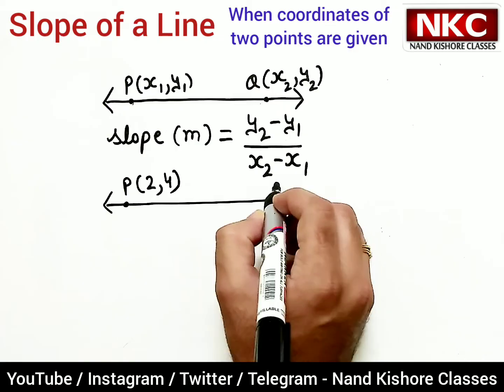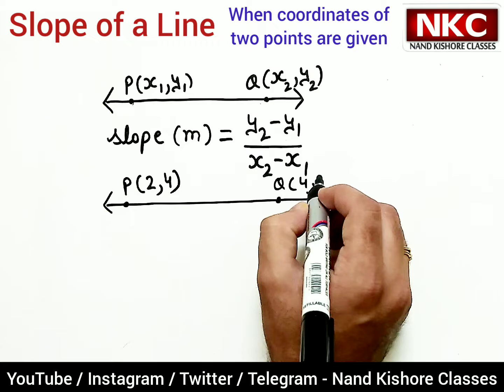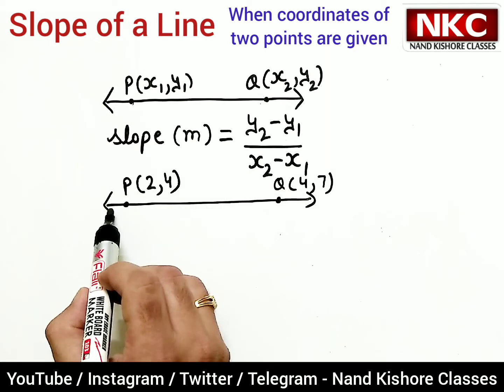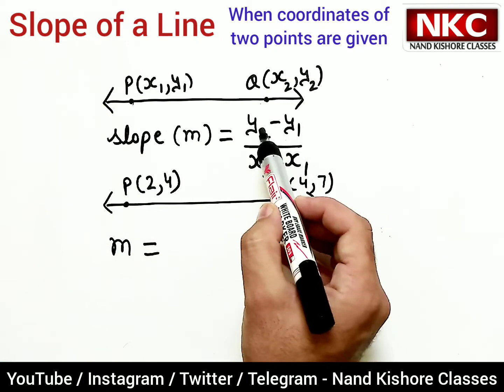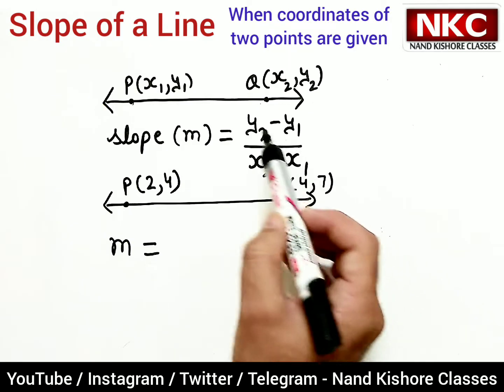And for point Q, let's suppose coordinates are 4, 7. Okay, so now if we want to find slope of this line, slope will be given by this formula: y2 minus y1 over x2 minus x1.